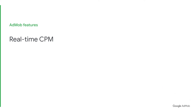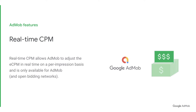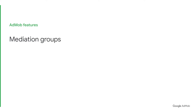The second feature is called Real-Time CPM. Real-Time CPM works the same way as ANO, but for the AdMob network. This means the AdMob network will be re-evaluated and positioned in real-time in the Mediation waterfall.